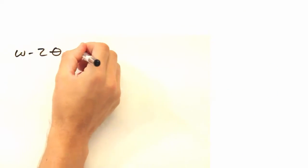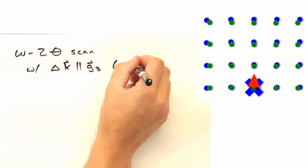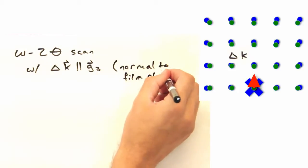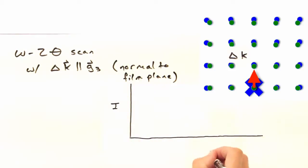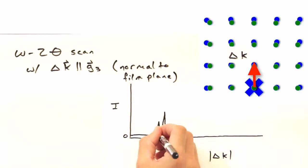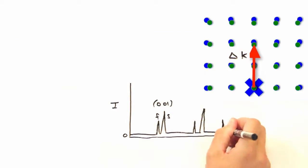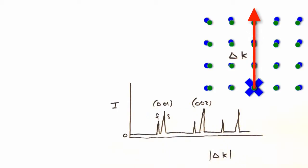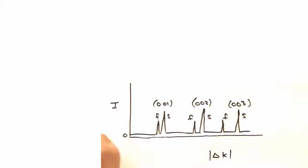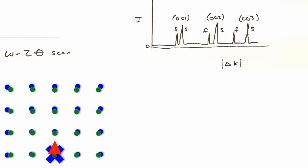Then if we did an omega 2 theta scan, where delta K points in the G1 direction, the first reflection we'd see is the 001 for the thin film, and then the same reflection for the substrate. And this would continue for the 002 reflection, and so on, until we see an intensity pattern that looks like this.